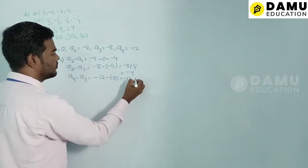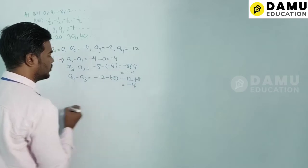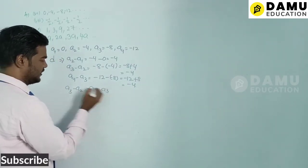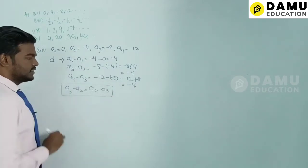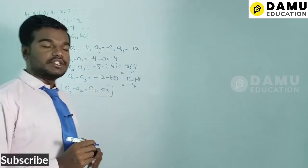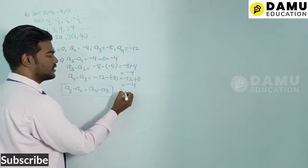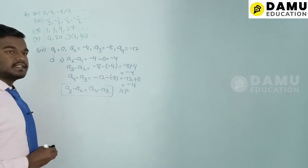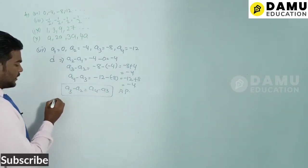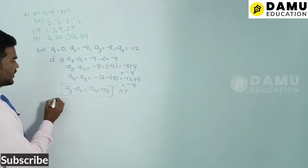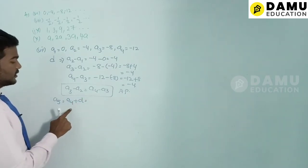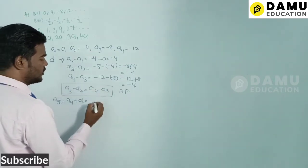Since a3 − a2 = a4 − a3, the common difference is the same and the series is in arithmetic progression. Now a5 = a4 + d = −12 + (−4) = −16.